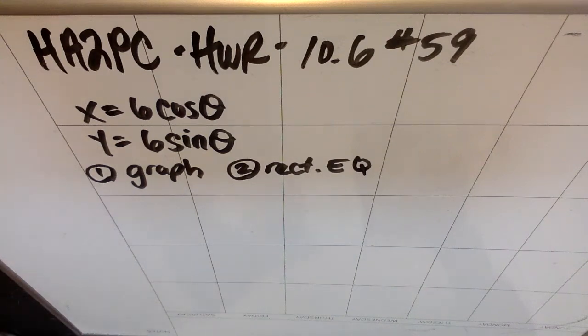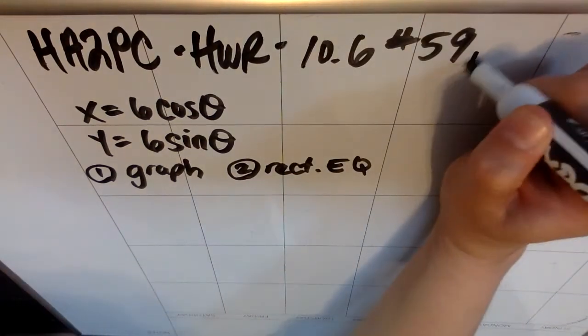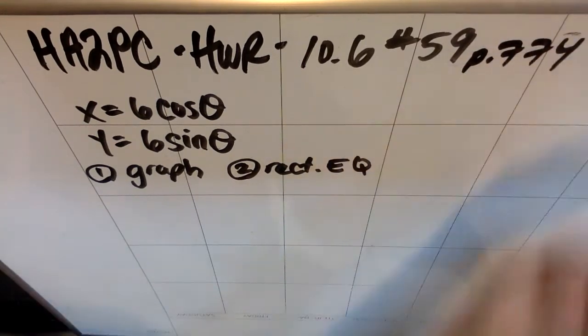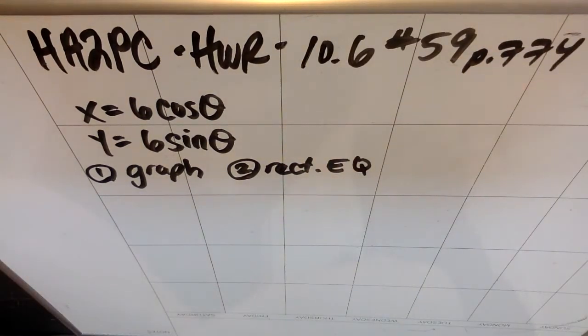We are doing honors algebra 2 pre-calculus homework review for 10.6 number 59 on page 774. So we're given a parametric system of equations: x equals 6 cosine theta and y equals 6 sine theta, and we're asked to both graph this and then also figure out if we can find the rectangular equation.